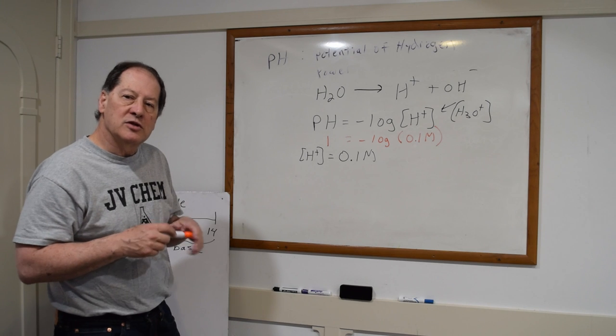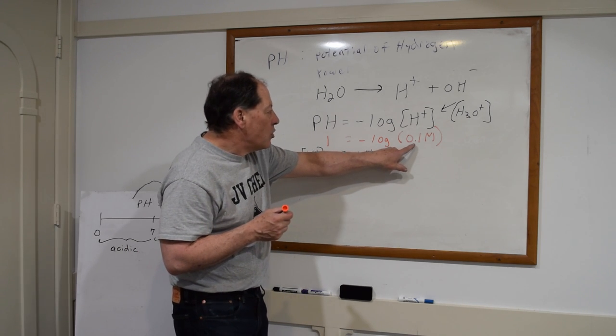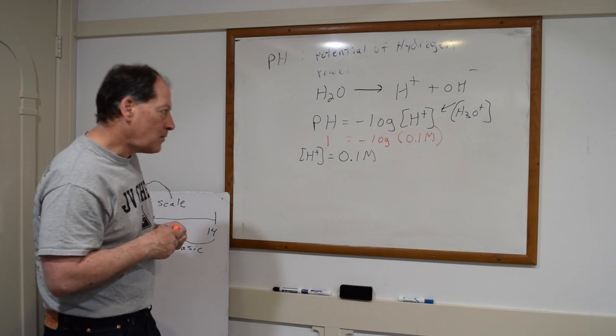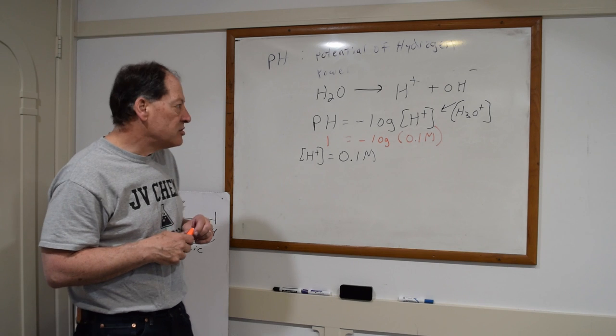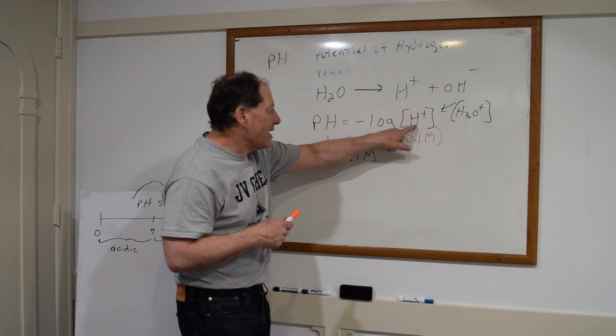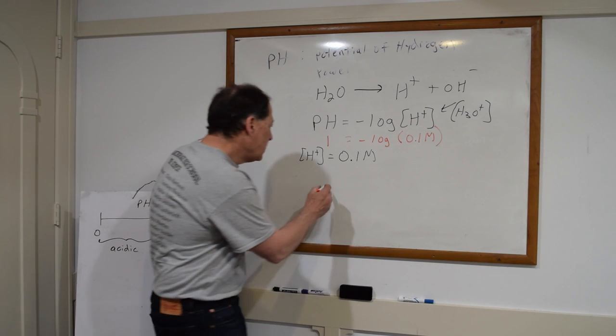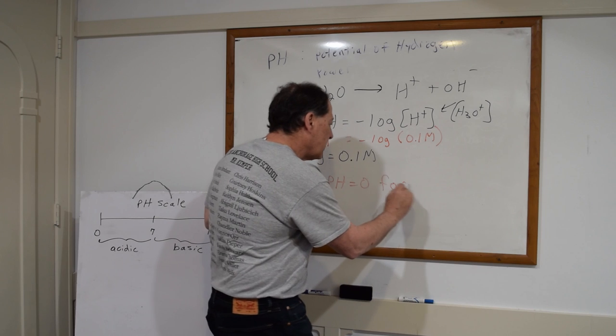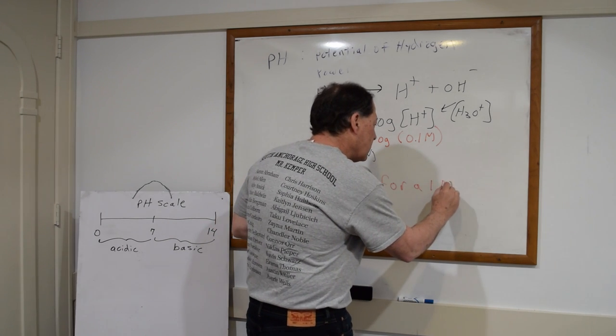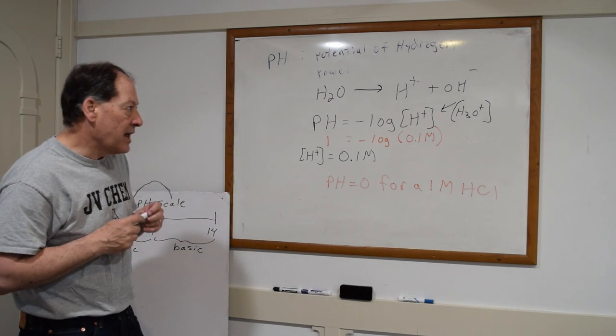Now the pH scale goes up by factors of 10. So if I have 1 molar, that's 10 times higher, right? 10 times higher hydrogen ion concentration. So the log of 1 is 0. And so the pH would be 0 for a 1 molar H+ or HCl concentration. So factors of 10.